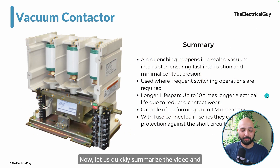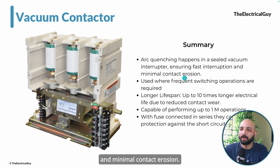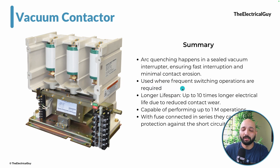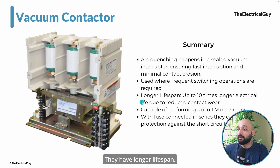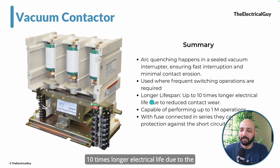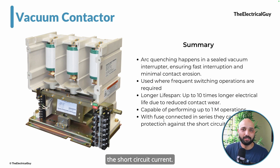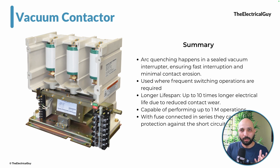To summarize: arc quenching in a sealed vacuum interrupter ensures fast interruption and minimal contact erosion, making vacuum contactors highly capable for high switching operations — up to 1 million operations. They are used wherever frequent switching is required: motor switching, power distribution loads, arc furnaces, and more. They have a lifespan up to 10 times longer than alternatives due to reduced contact wear. With a fuse in series, they can also provide short circuit protection. Remember: vacuum circuit breakers and vacuum contactors are two different devices and cannot replace each other.